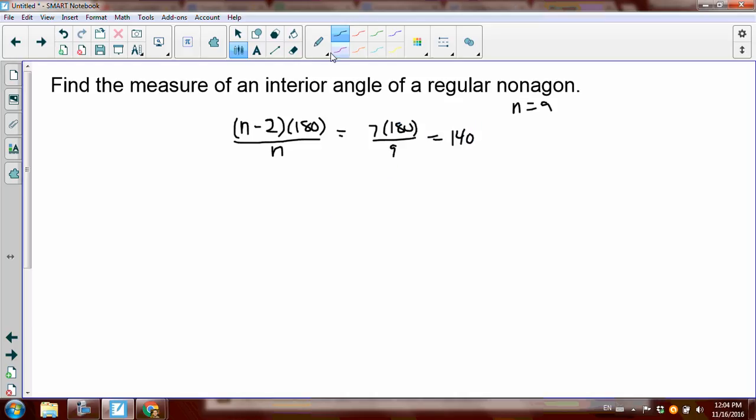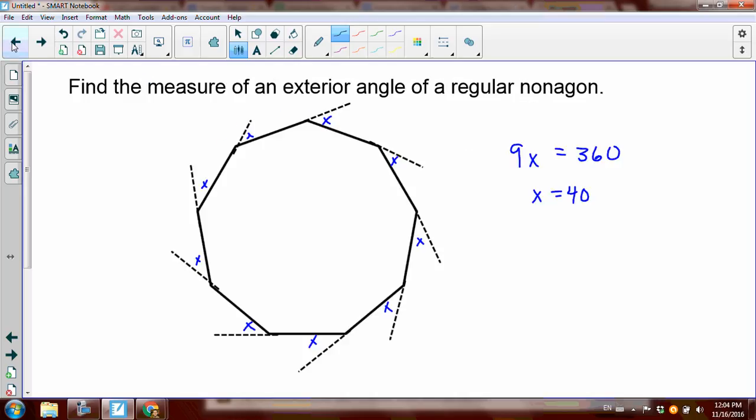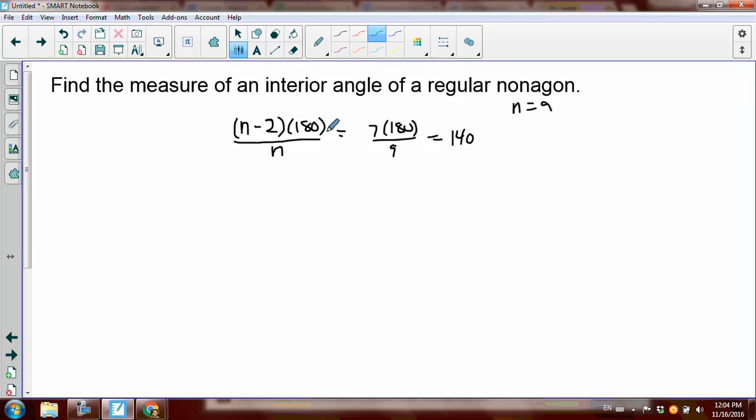But that is a waste of energy to remember this, because remember this picture back here? If we figure out the measure of an exterior angle, the interior angle y forms a linear pair with the exterior angle. So if the exterior angle is 40, the interior angle is 140. We don't need this formula.